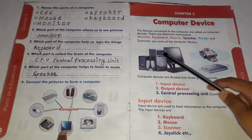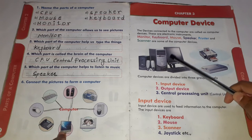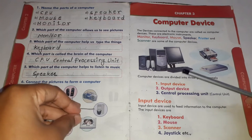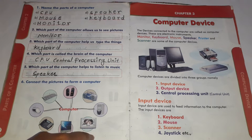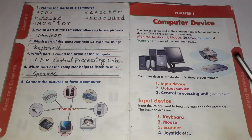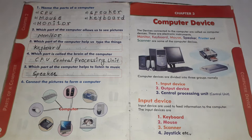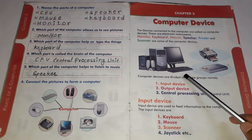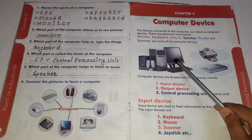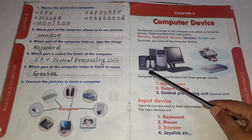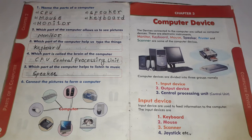You know students, this is all the computer and computer parts. And whatever extra we are using, like a speaker, printer, camera, keyboard, scanner, printer — these all things are called devices. The devices connected to the computer are called Computer Devices. जो CPU, Monitor के साथ connect होती है, जैसे कि keyboard, speaker, printer, scanner — these all things are called devices.